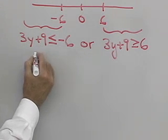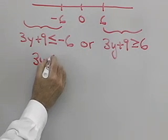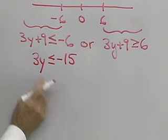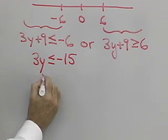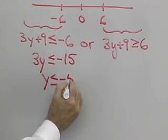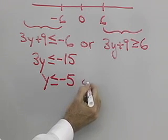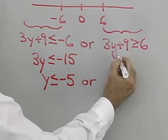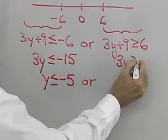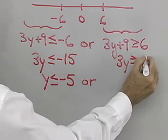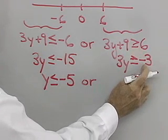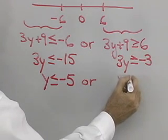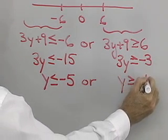Adding negative 9 to both sides of the first inequality, I have 3y less than or equal to negative 15. Multiplying both sides by one-third, y is less than or equal to negative 5. Or, solving the second inequality by adding negative 9 to both sides, 3y is greater than or equal to negative 3. Multiplying both sides by one-third, y is greater than or equal to negative 1.